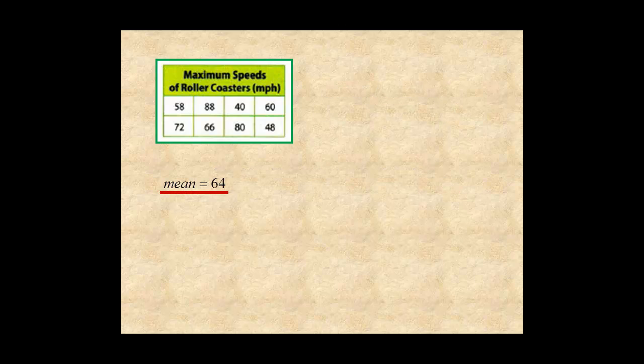The next step is to find the absolute value of the difference of each data value and the mean. The absolute value means no negative numbers. You just want the difference between the two numbers.